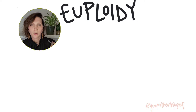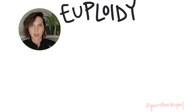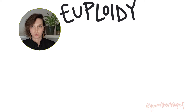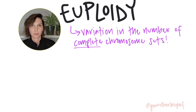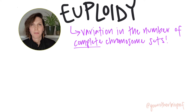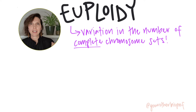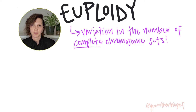Ploidy is going to tell us something about how many sets of chromosomes are present in a particular cell — so how many different versions of each chromosome there are in that cell.